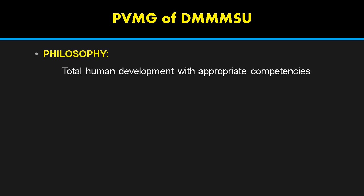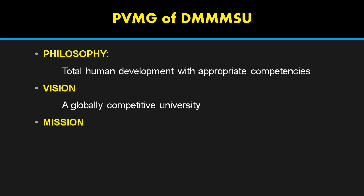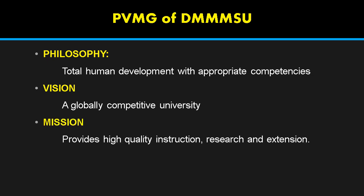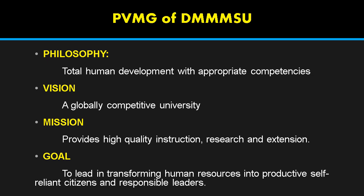It is also important for us to know the philosophy, vision, mission and goal of DIMSUM. Starting with its philosophy: total human development with appropriate competencies. Vision: a globally competitive university. Mission: provides high quality instruction, research and extension. Goal: to lead in transforming human resources into productive, self-reliant citizens and responsible leaders.